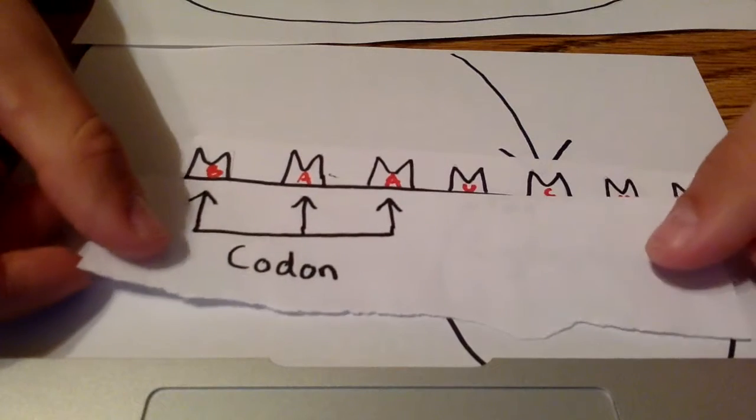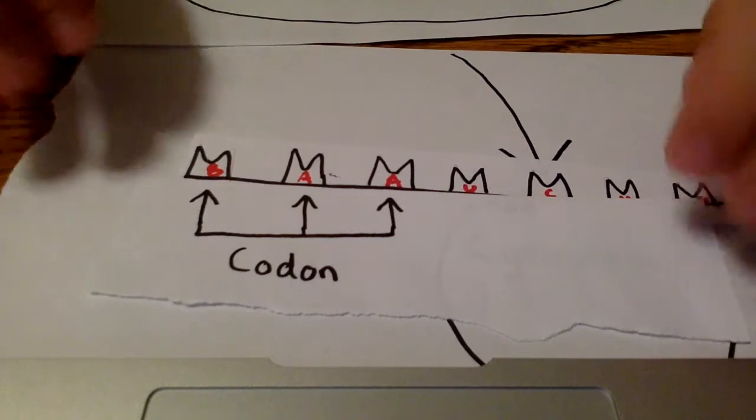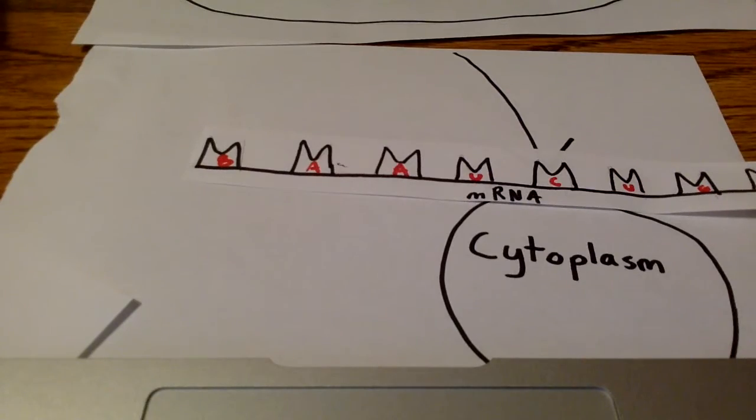Here, you will see that we have a codon here, which is a 3-nucleotide sequence of genetic information. In this example, the codon is guanine, adenine, and adenine.